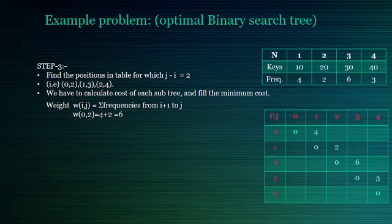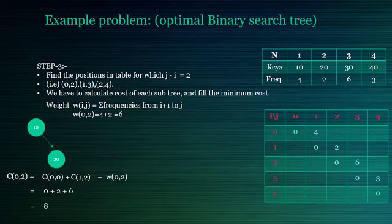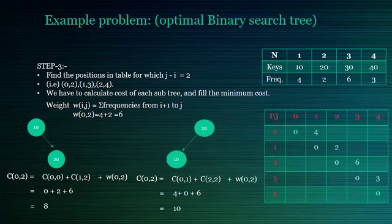Weight w(i,j) is given by summation of all the frequencies from i plus 1th index to jth index. Weight of 0,2 is 6. Now when the subtree's root node is 1, the cost is 8. And when the subtree's root node is 2, the cost is 10. Among these two, 8 is the minimum.